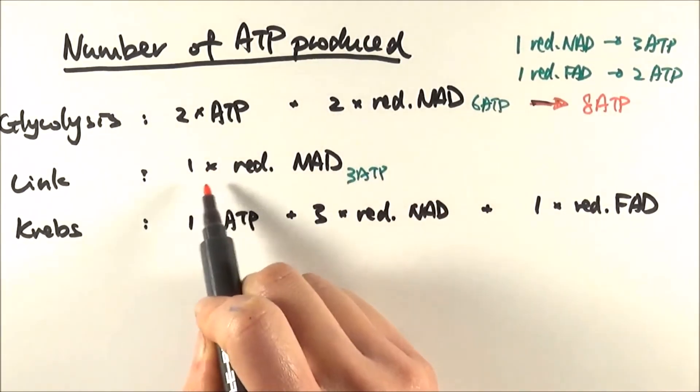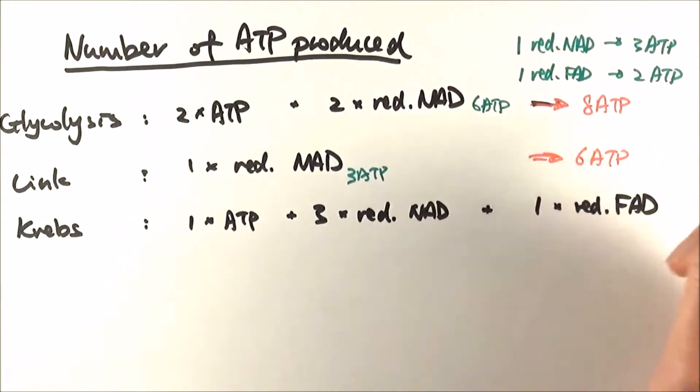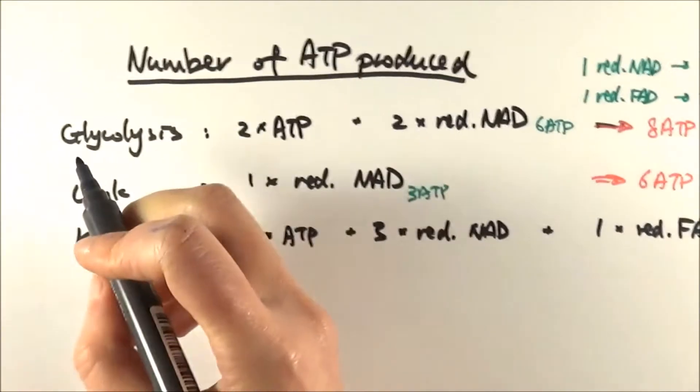From just 1 glucose molecule, in this case, we have made 2 reduced NAD, meaning we have made 6 ATP. So keeping in mind that, we need to double everything up in this reaction here.